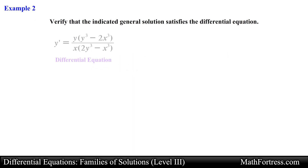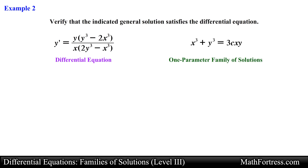Alright, let's try the final example. The differential equation is y prime equals y times the quantity (y cubed minus 2x cubed) over x times the quantity (2y cubed minus x cubed). And the one-parameter family of solutions to verify is x cubed + y cubed equals 3cxy.